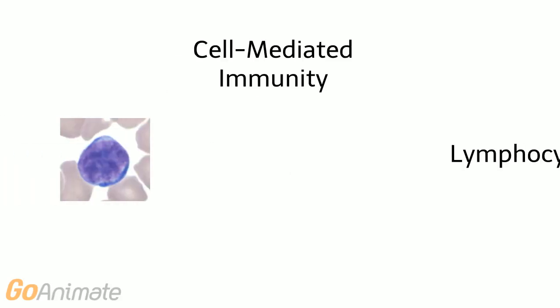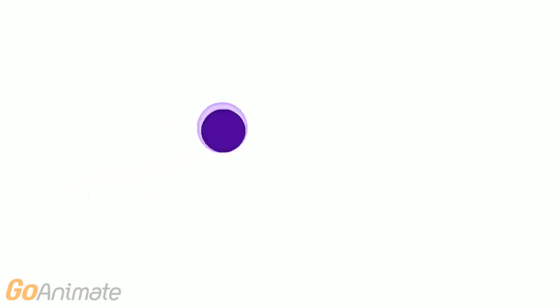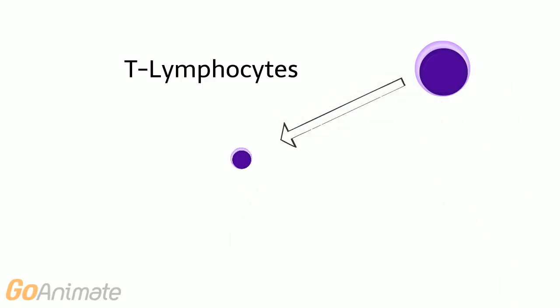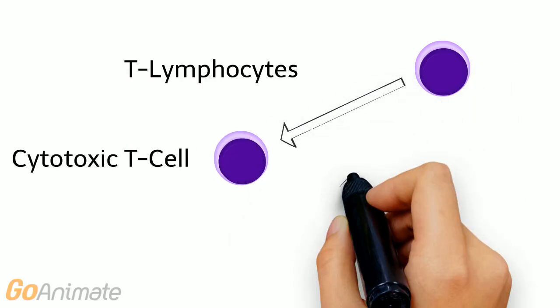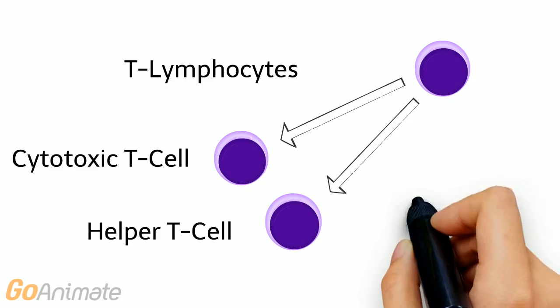White blood cells called lymphocytes play an important role in adaptive immunity. The lymphocytes in cell-mediated immunity are known as T cells and include cytotoxic T cells, helper T cells, and suppressor T cells.